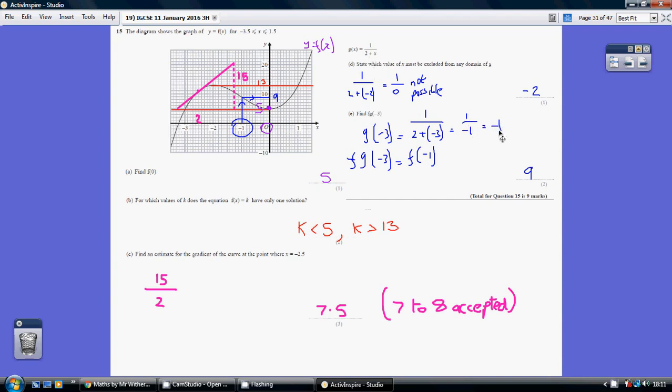We then go and pop that into the f machine. The f machine is what we've got on this graph. So when we pop minus 1 into the f machine, what reading do we get? We get a plus 9. Now, that's a difficult question.